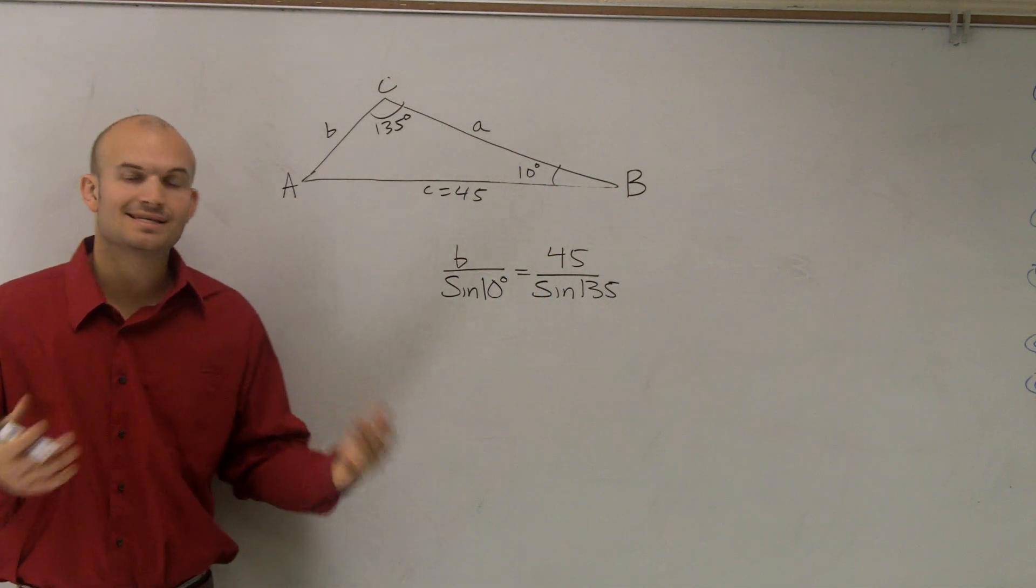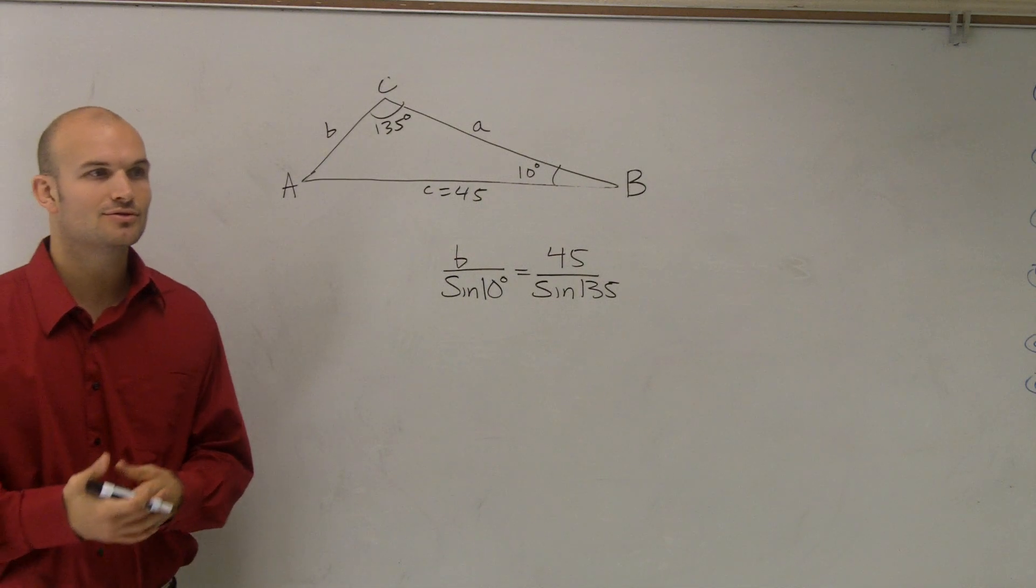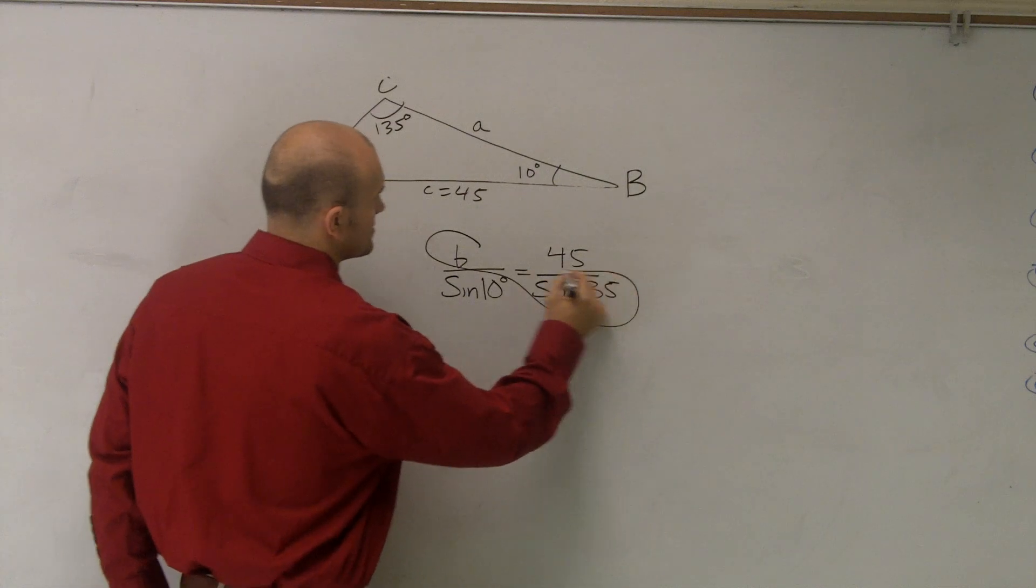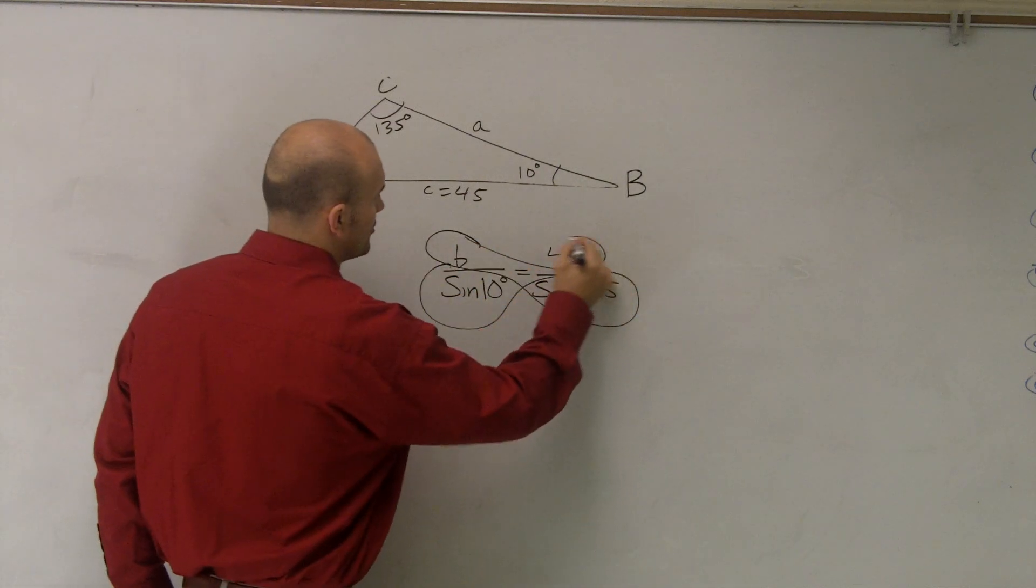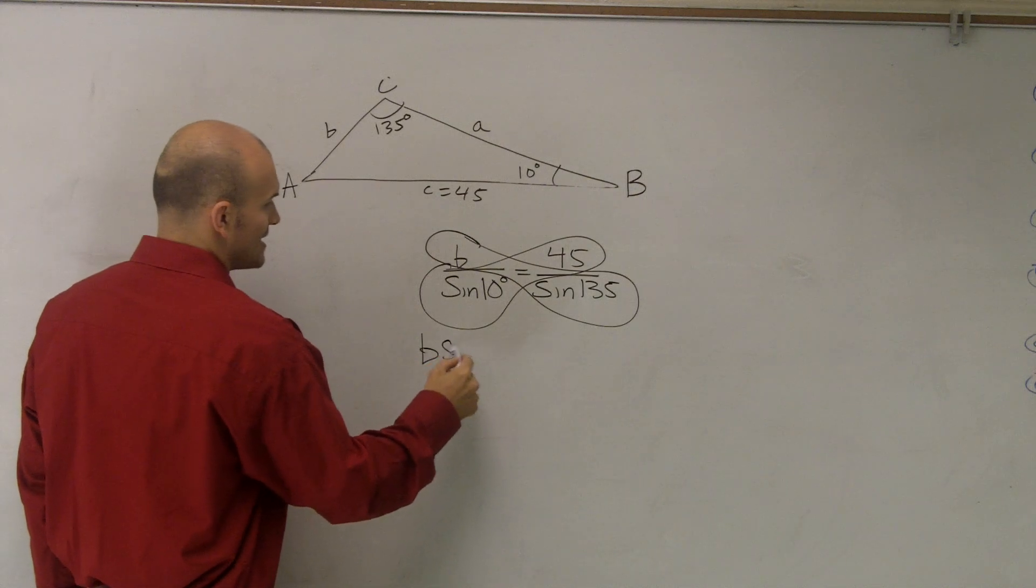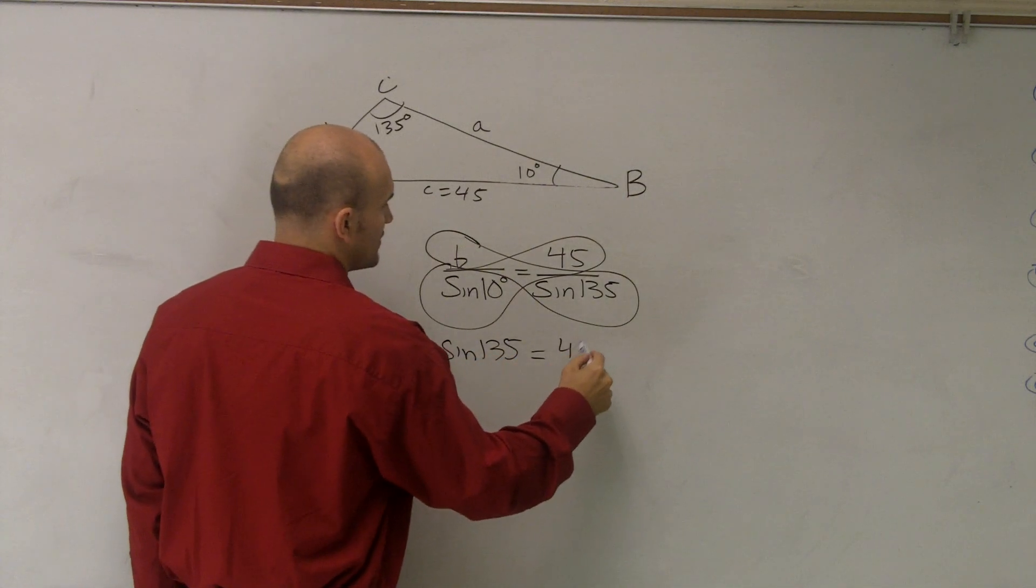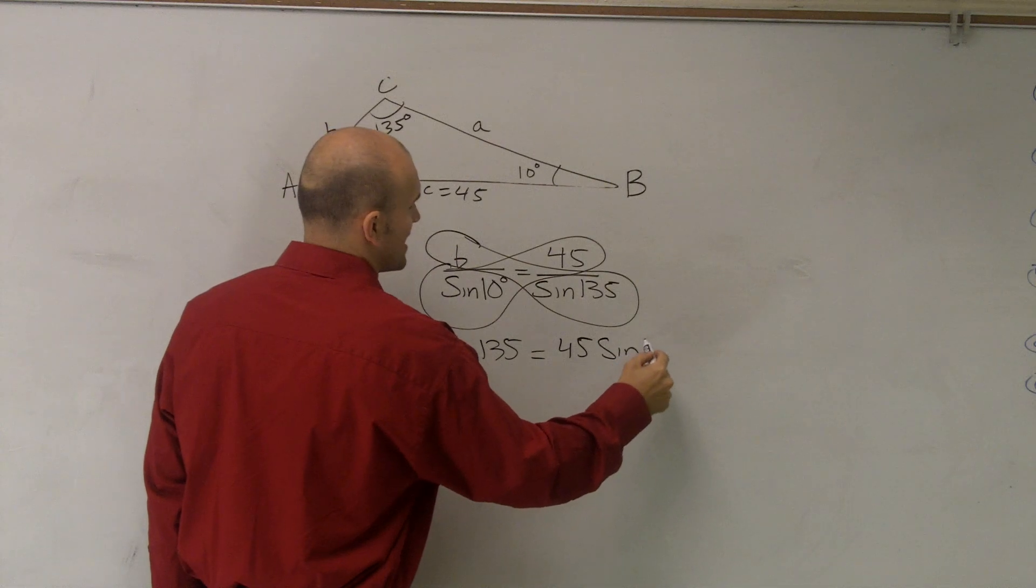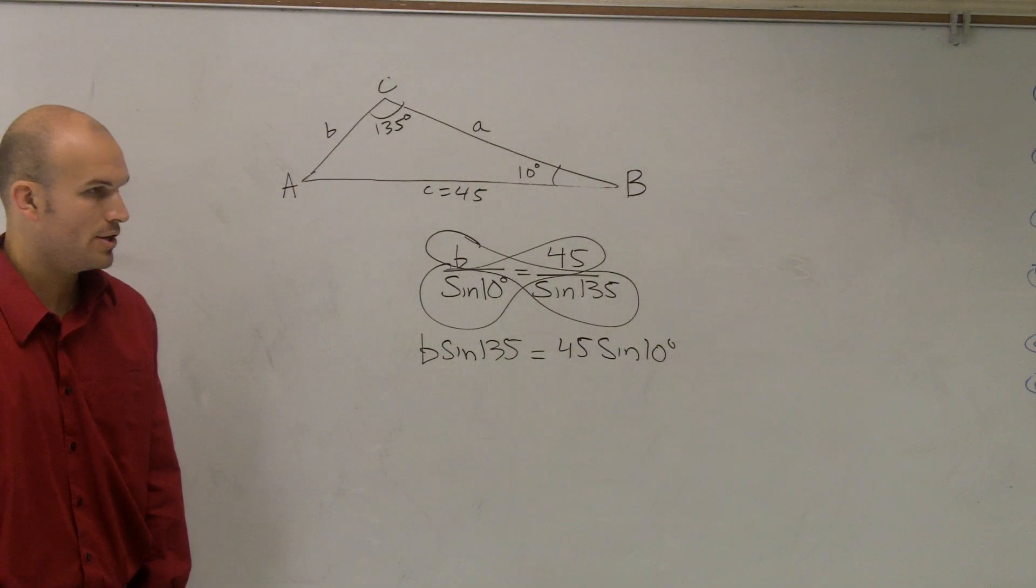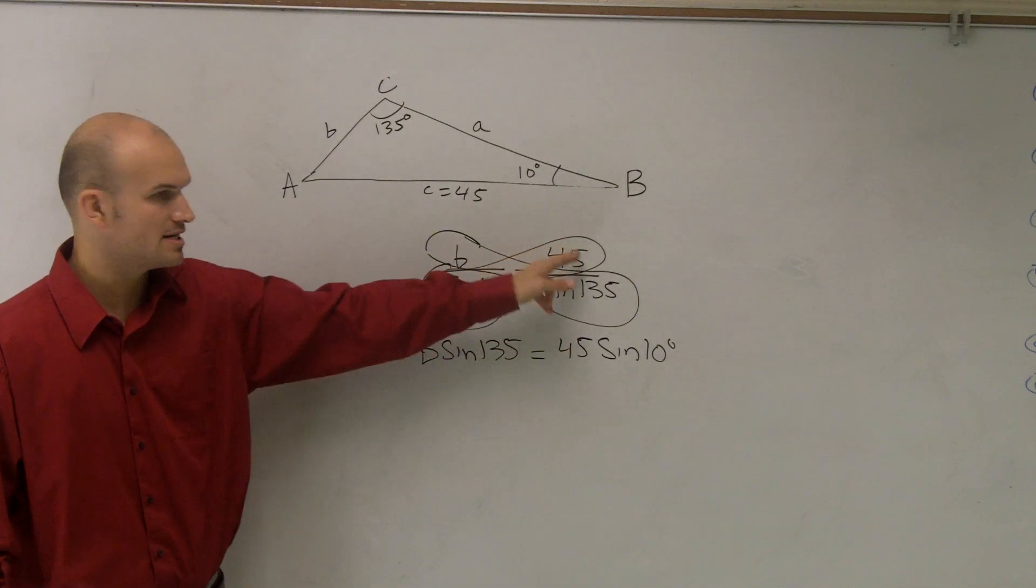So one of the easy ways that a lot of students remember on solving a proportion was to cross multiply, right? That's all you're going to do, just do your old cross multiply. B times sine of 135 is equal to 45 times sine of 10 degrees. Right? B times this, and then sine times that, right?